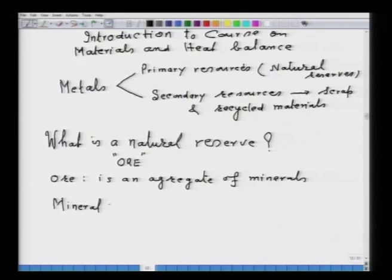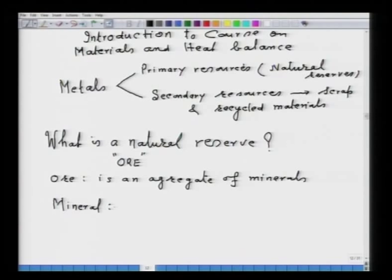Ore is an aggregate of minerals, and a mineral in general has elements combined in fixed stoichiometric proportions. For example, in Al₂O₃, two atoms of aluminium are combined with 1.5 moles of oxygen. The natural reserve of a metal is an ore in the form of a mineral — that is the important point.